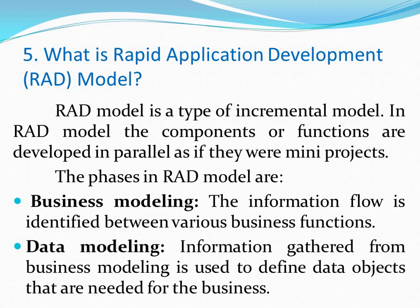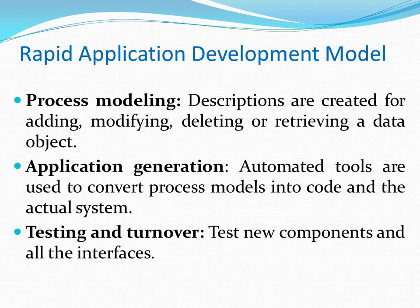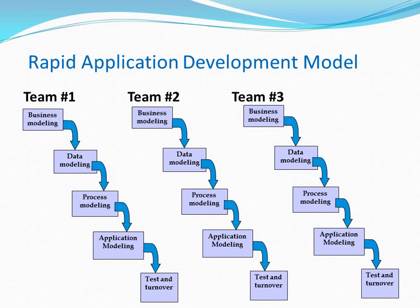What is Rapid Application Development Model? RAD Model is a type of incremental model where components or functions are developed in parallel as if they were mini-projects. The phases are: business modeling, where information flow is identified between various business functions; data modeling, where information from business modeling is used to define data objects needed for the business; process modeling, where descriptions are created for adding, modifying, deleting or retrieving a data object; application generation, where automated tools are used to convert process models into codes and the actual system; and testing and turnover, where new components and all interfaces are tested.